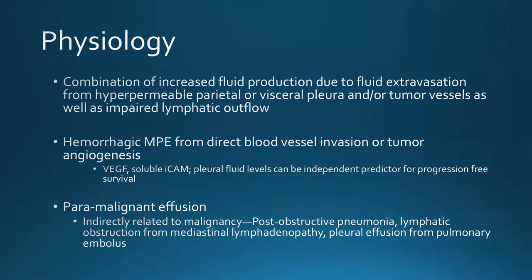You can get a hemorrhagic malignant pleural effusion from direct blood vessel invasion or tumor angiogenesis. Studies are looking at VEGF and soluble ICAM receptors as independent predictors for progression-free survival. A paramalignant effusion is one indirectly related to the malignancy — from post-obstructive pneumonia, atelectasis, lymphatic obstruction from bulky mediastinal lymphadenopathy, or a pulmonary embolus — where you don't directly see cytologically proven cancer cells in the pleural fluid.